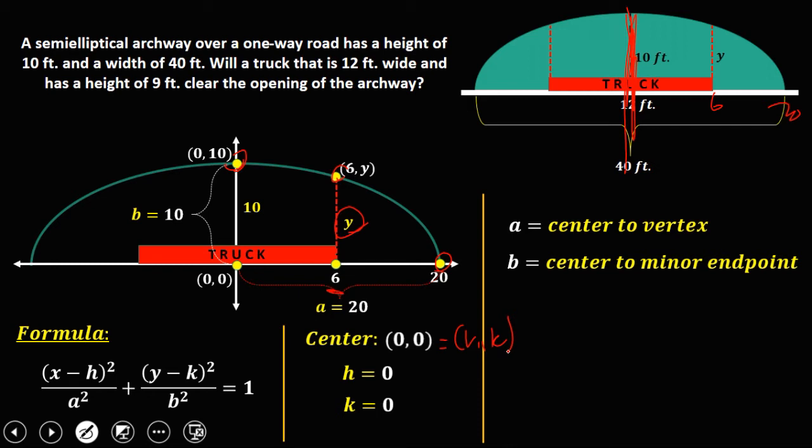We need this value x and y. And since y is unknown, so using this coordinate, we have (6, y). So x is 6 and y is y. So we can solve now this problem by substituting all these values.